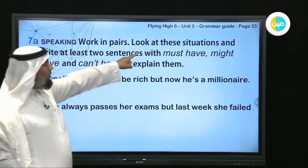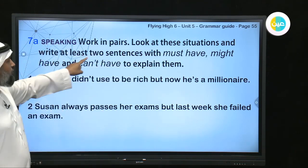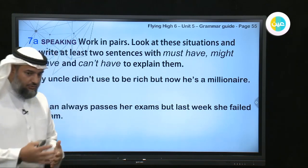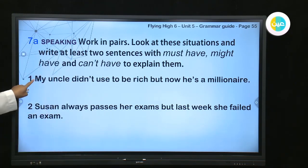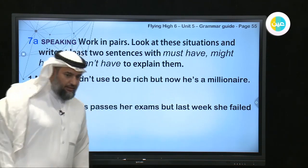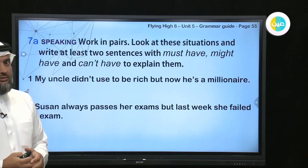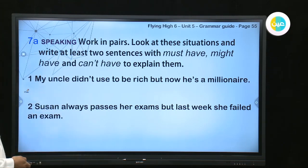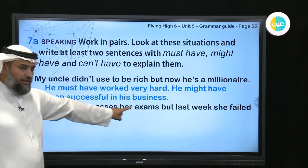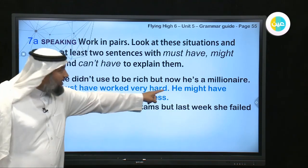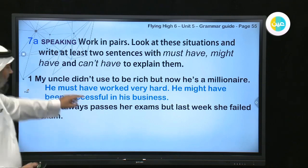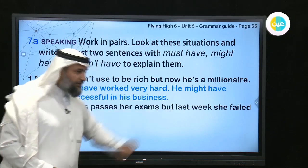Now for the speaking exercise: look at these situations and write at least two sentences using 'must have,' 'might have,' and 'can't have' to explain them. For example: 'My uncle didn't use to be rich but now he's a millionaire.' You might say: 'He must have worked very hard' — that's 90% sure. Or: 'He might have been successful in his business' — that's 50% sure.